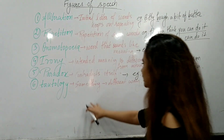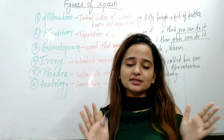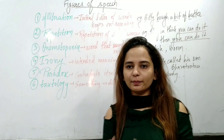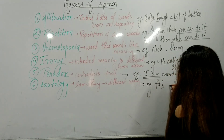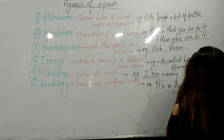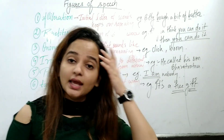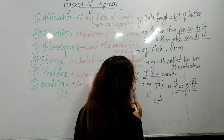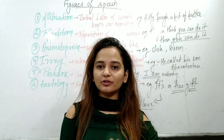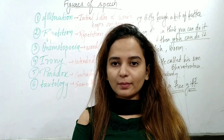Next we have tautology. Tautology means that in one sentence, two words with the same meaning are used together. For example, 'free gift' — both words mean the same thing. In English grammar, we also call this 'superfluous.' So when two similar or redundant words appear in one sentence, we call it tautology. These are the six figures of speech discussed in this video.